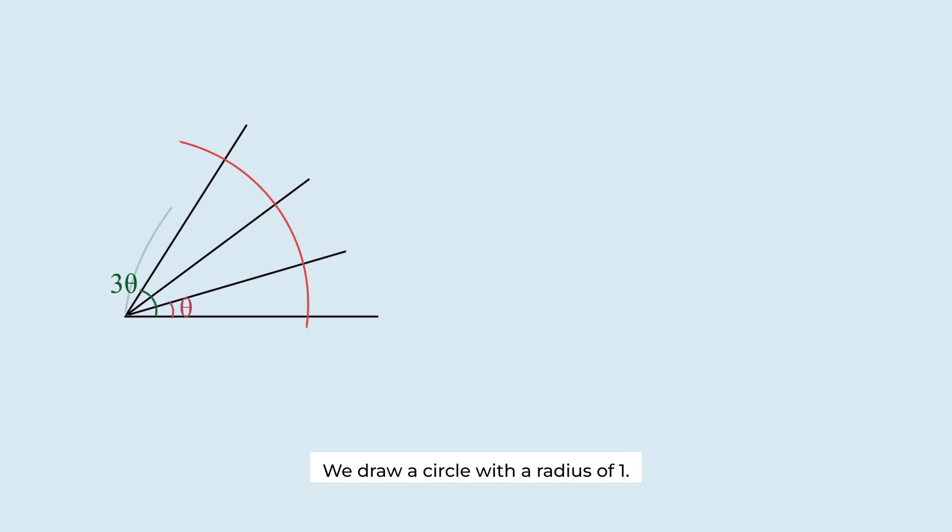We draw a circle with a radius of 1. We see two intersection points. Draw perpendicular lines passing through two points. This is x. This is y.